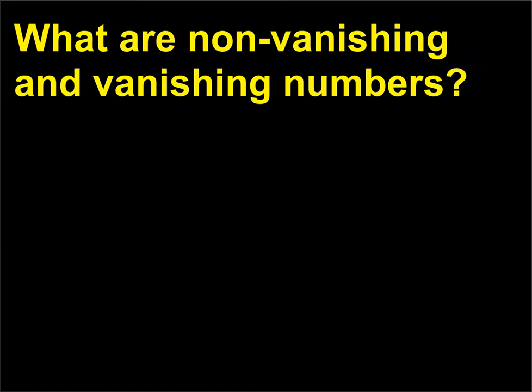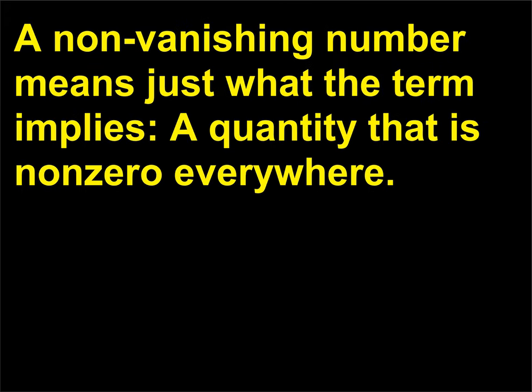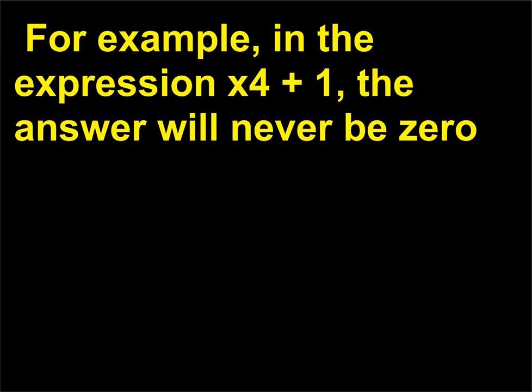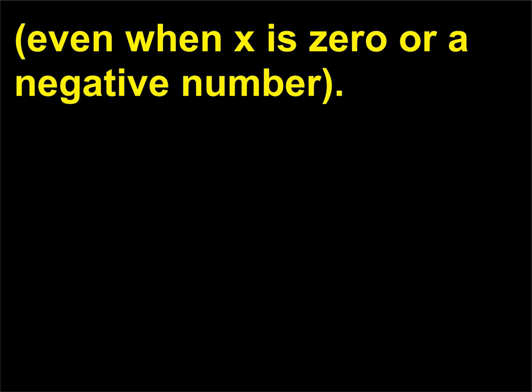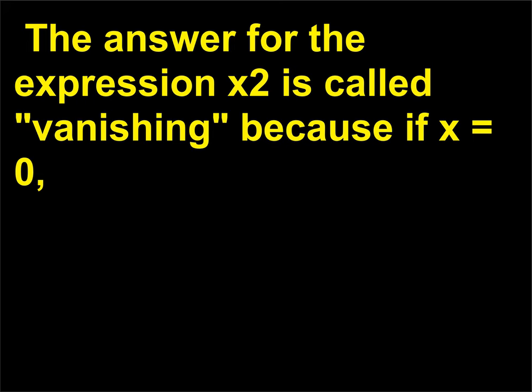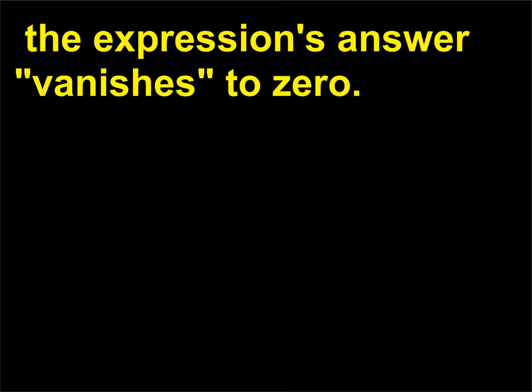What are non-vanishing and vanishing numbers? A non-vanishing number means just what the term implies: a quantity that is non-zero everywhere. For example, in the expression x⁴ plus 1, the answer will never be 0, even when x is 0 or a negative number. The answer for the expression x² is called vanishing because if x equals 0, the expression's answer vanishes to 0.